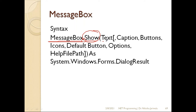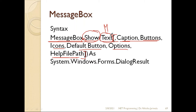The first argument is text, which is a mandatory argument. The remaining arguments — caption, buttons, icon, default button, options, and help file path — are all optional, as indicated by the square brackets in the syntax. The text argument contains the actual information or message we want to display to the user.